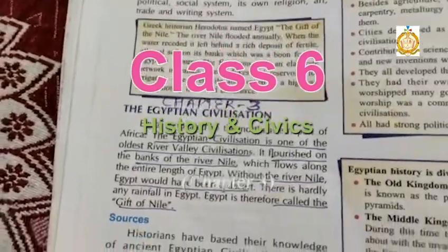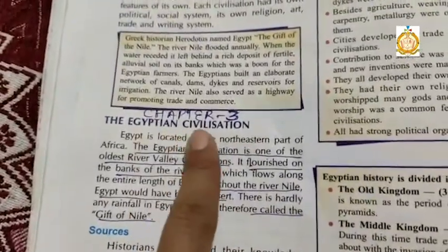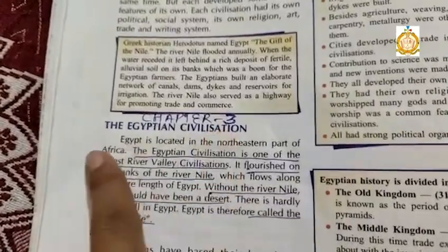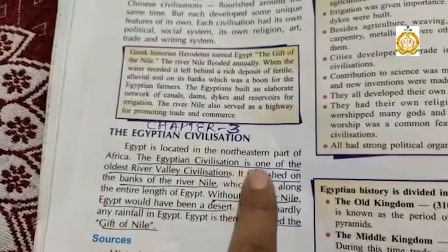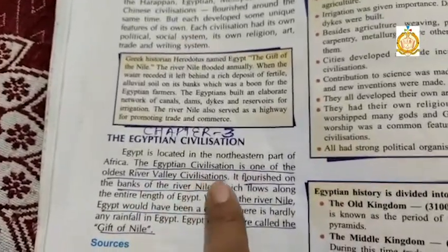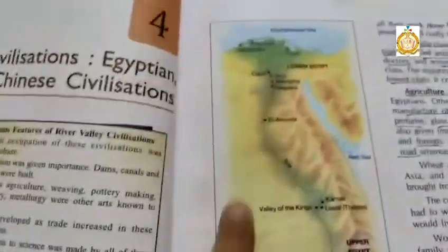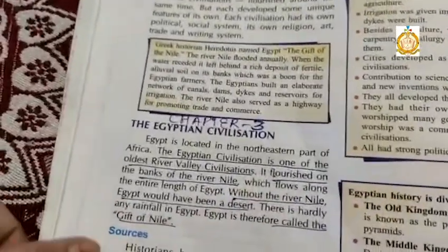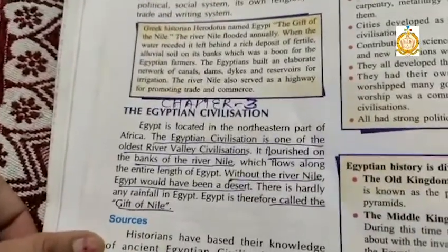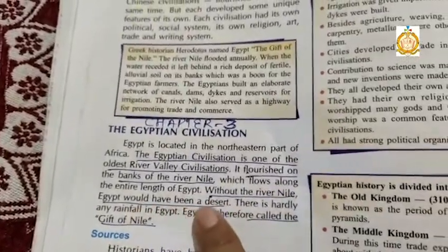This is T6 standard history, chapter three: Egyptian civilization. Like the Indus Valley civilization and Mesopotamian civilization, Egyptian civilization is also one of the oldest river valley civilizations. It was developed and flourished on the bank of the river Nile, because the river Nile provided water for domestic purposes and for transportation and communication. Egypt is also called a gift of the Nile, because without the river Nile, Egypt would have been a desert.